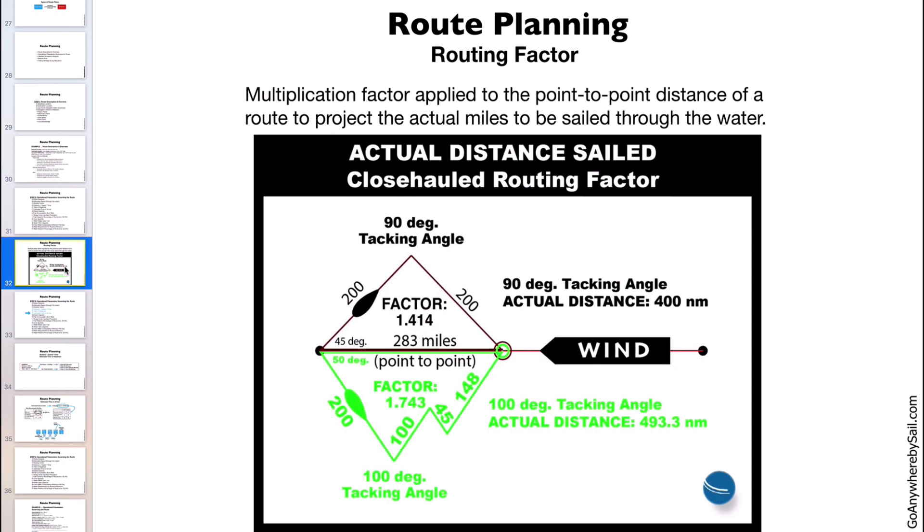When you're going close-hauled it's different because you have to tack back and forth, and your tacking angle and the sea state and the speed of the wind and the efficiency of the vessel all factor in to how much additional distance you're going to sail.